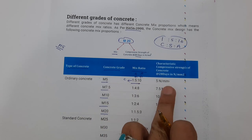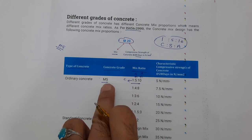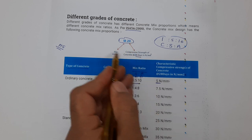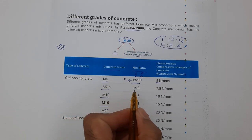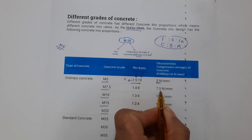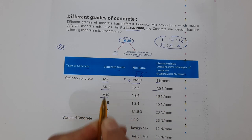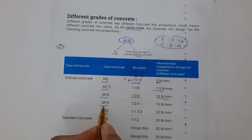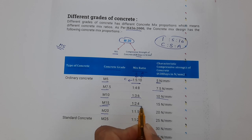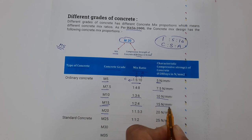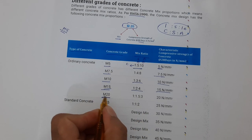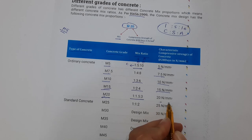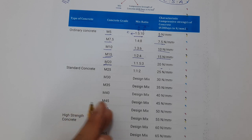The characteristic strength of M5 concrete is 5 Newton per mm square. For M7.5, the ratio is 1:4:8, and the strength is 7.5 Newton per mm square. For M10, the ratio is 1:3:6, and the strength is 10 Newton per mm square. For M15, the ratio is 1:2:4, with a strength of 15 Newton per mm square. For M20, the ratio is 1:1.5:3, with a compressive strength of 20 Newton per mm square.